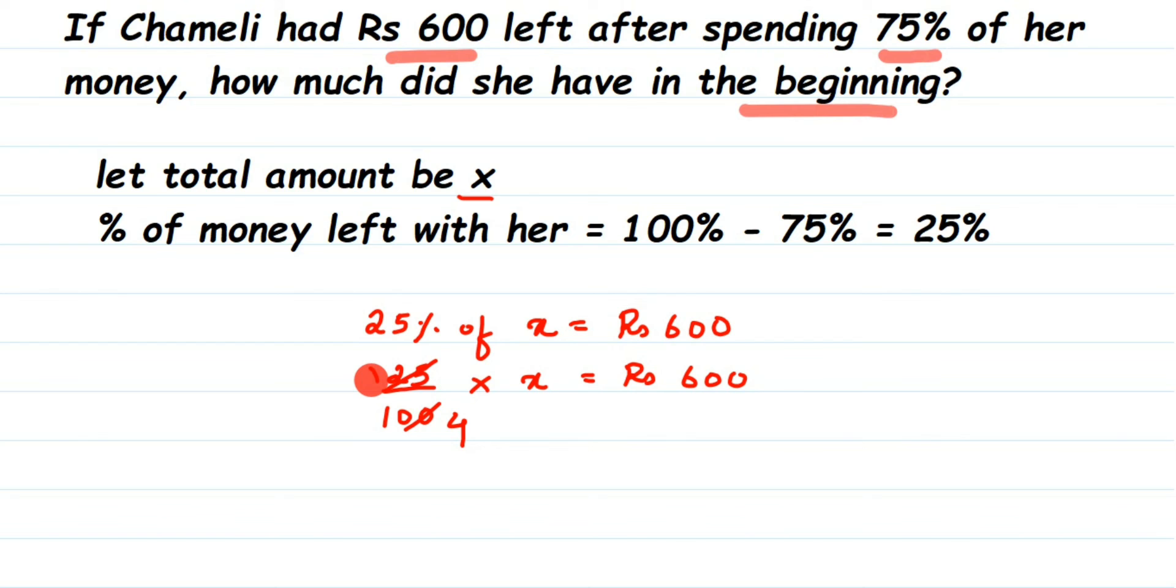But I don't want this 4 in the denominator. I want to transpose this to the other side. So I want to shift this, but 4 is in division. When you take this to the other side of the equation, it goes to multiplication. So x will be equal to rupees 600 multiplied by 4, which is equal to rupees 2400. So total 2400 rupees she had in the beginning.